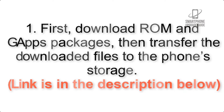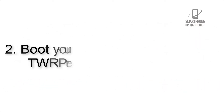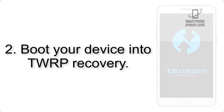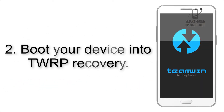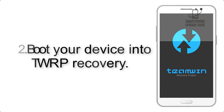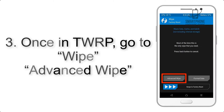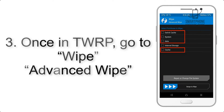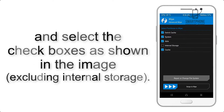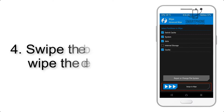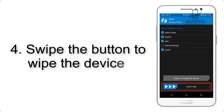Step 2: Boot your device into TWRP recovery. Once in TWRP, click on Wipe, then Advanced Wipe, and select the checkboxes as shown in the image, excluding internal storage.